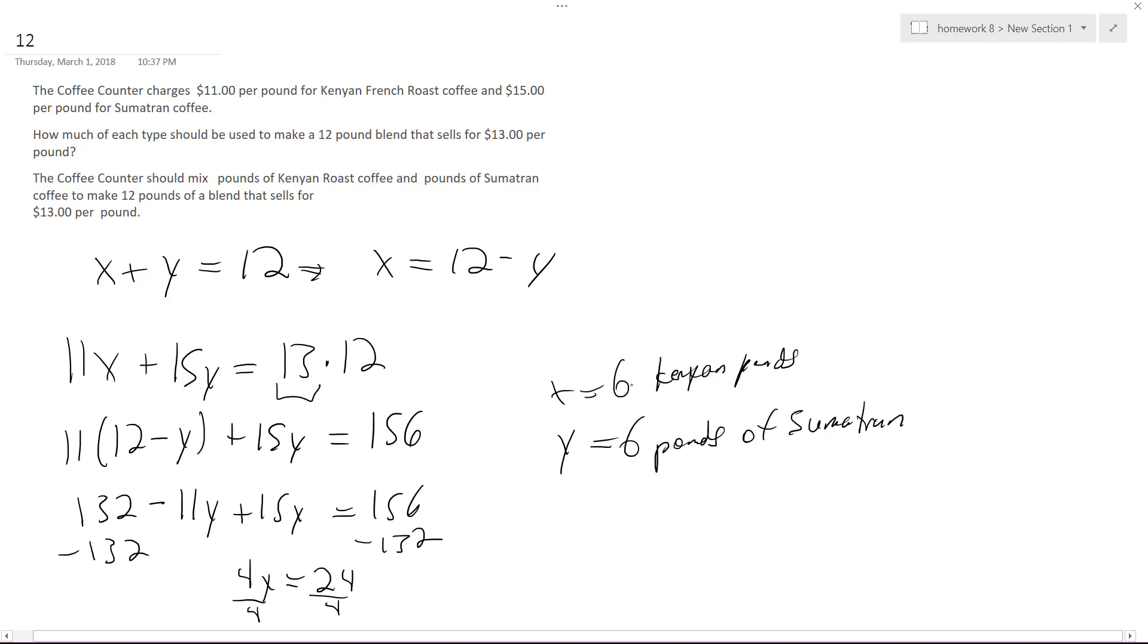So what happens here is if we have 6 times 11 plus 6 times 15, then divided by 12, you get $13 a pound. All right, that's it. I hope this helped you out. Thanks for watching, have a great day.